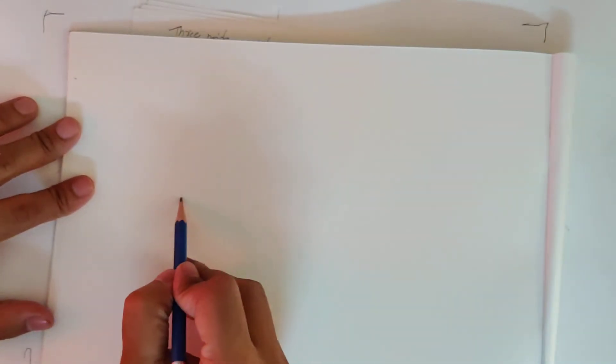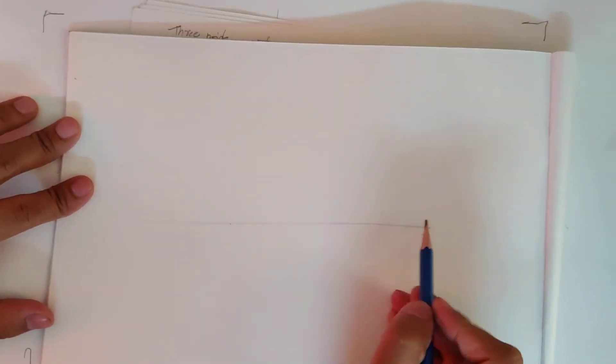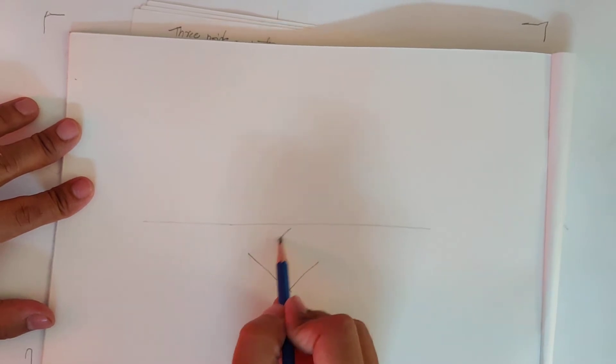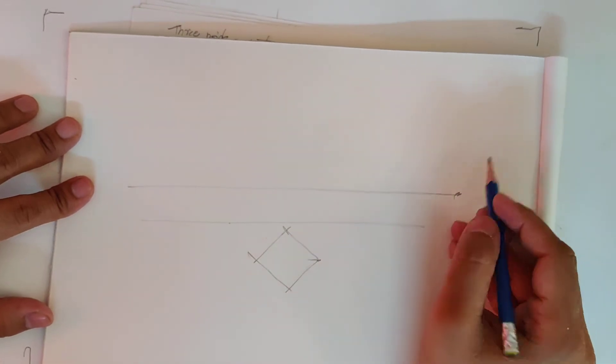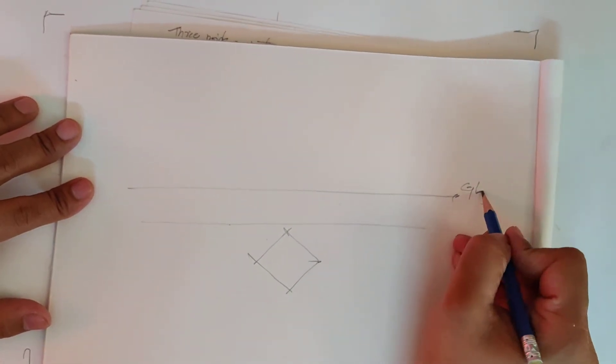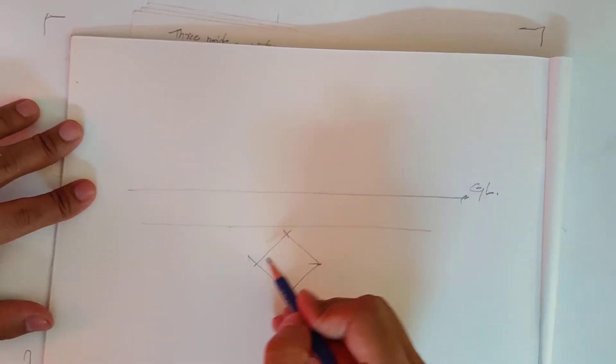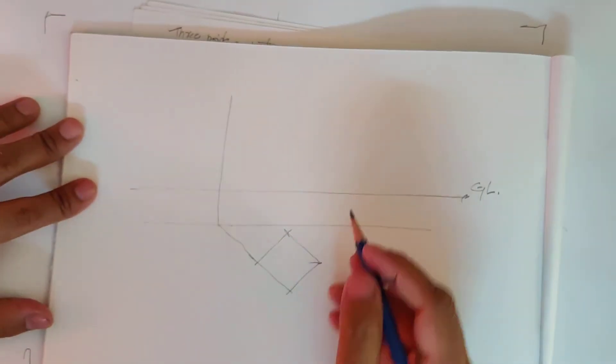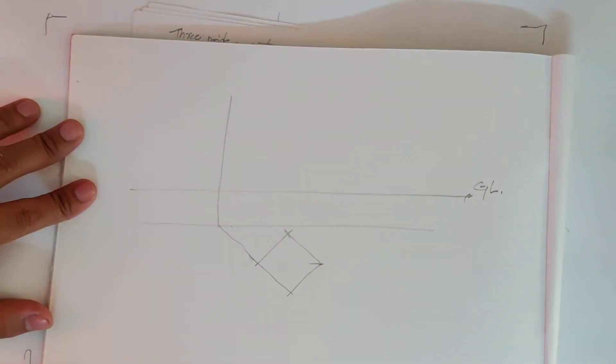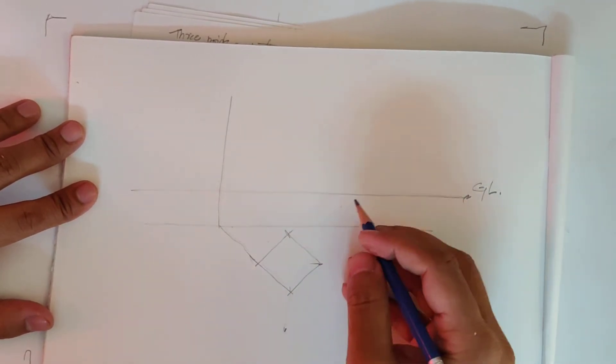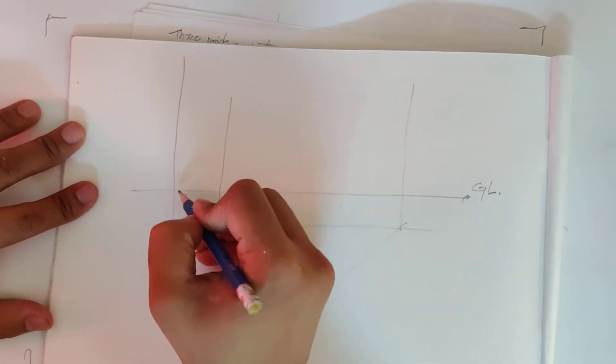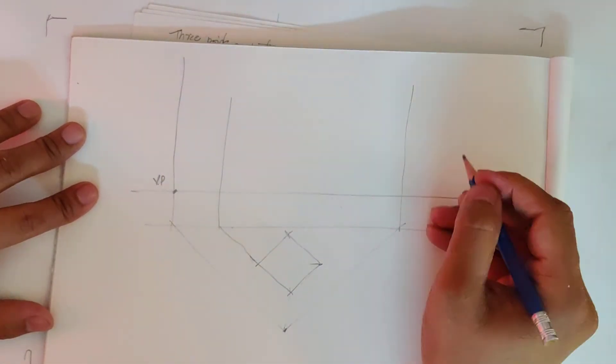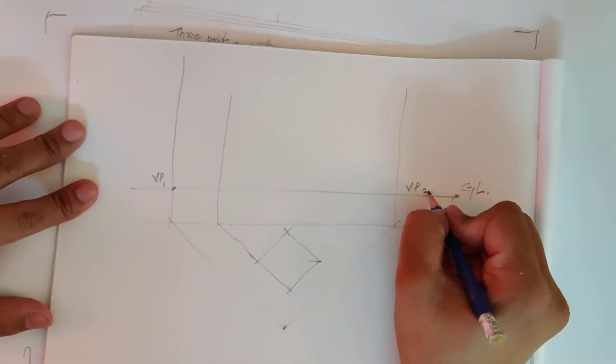Let's take another example. Picture plane, my object. The ground line, my ground line is also my horizon line. This is the line which will have my vanishing points. Station point, vanishing point one, vanishing point two.